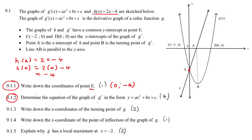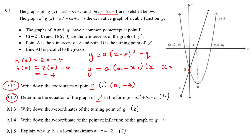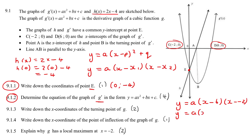Now we need to determine the equation of this graph. We know it's a parabola, and in grade 11 we learn two ways to find the equation of a parabola: either they give you the turning point, or they give you the two x-intercepts. Here we can see they've given us the two x-intercepts, so we say y = a(x − 6)(x − (−2)), which becomes a(x − 6)(x + 2).